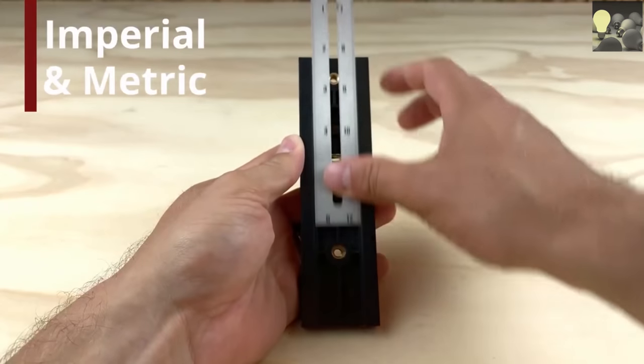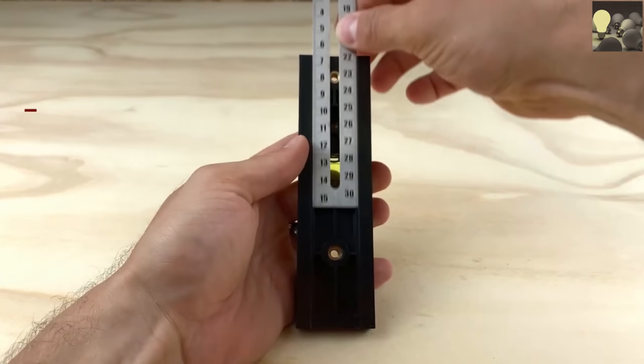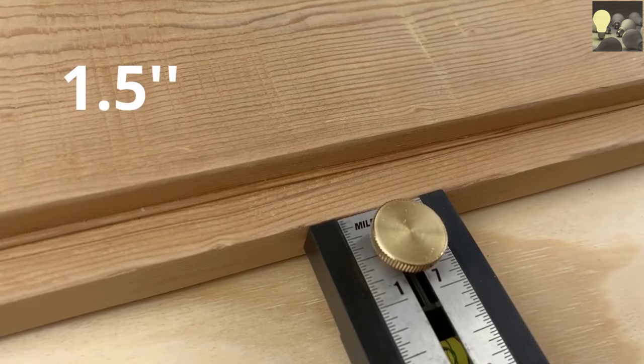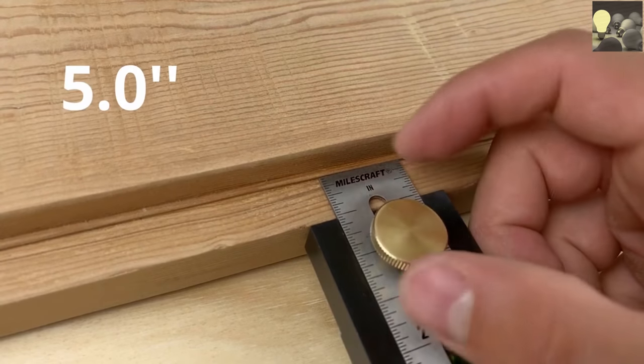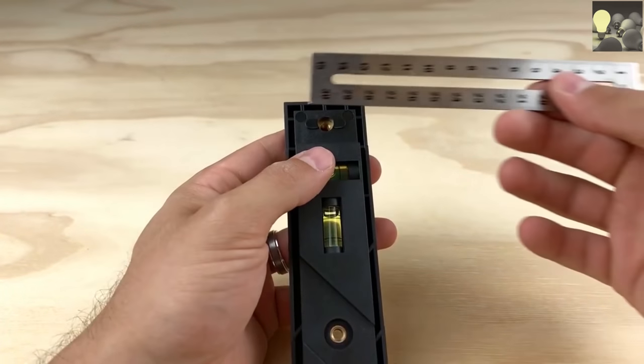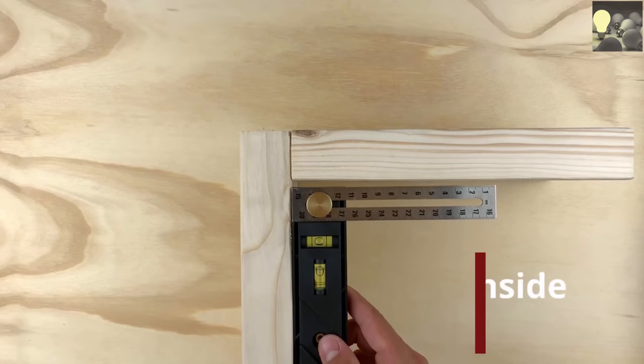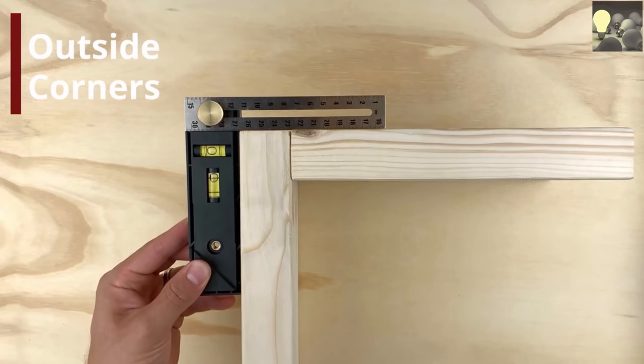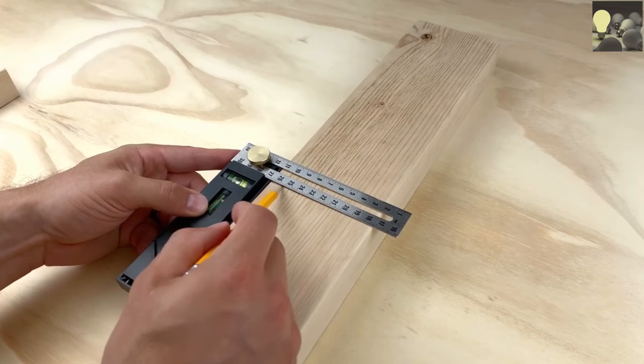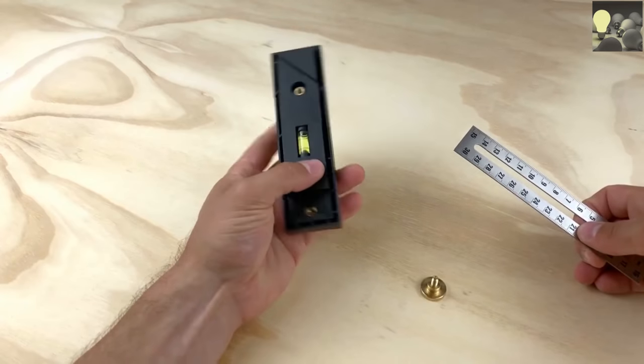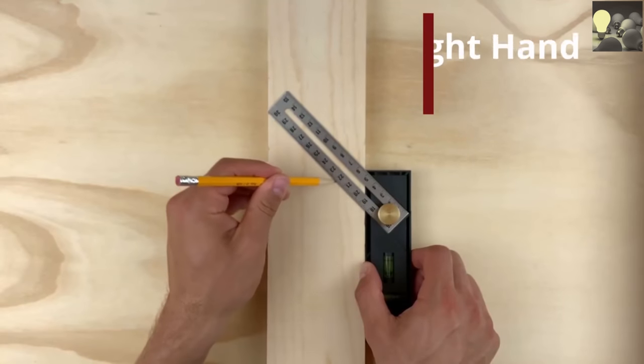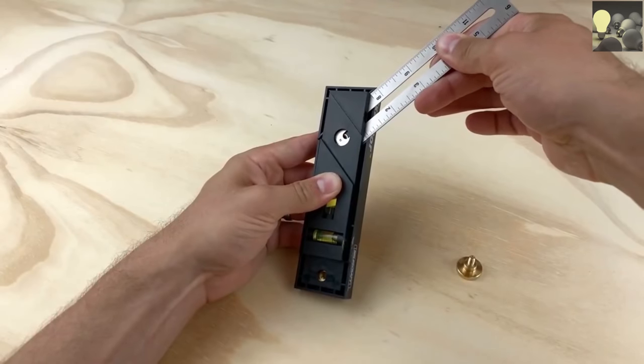Transfer measurements with a double-sided scale in imperial or metric units. Use the depth gauge up to 5 inches. Lock in a 90-degree square to measure inside corners, outside corners, or scribe 90-degree angles. Two 45-degree angle slots will let you mark a right-hand or left-hand miter joint.